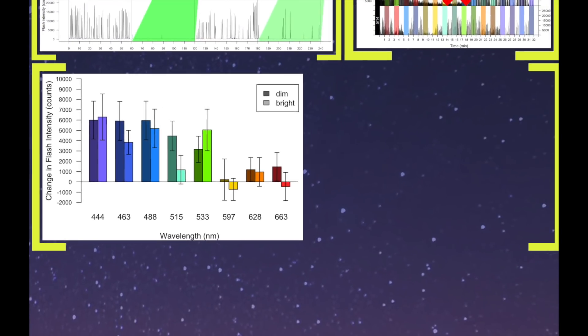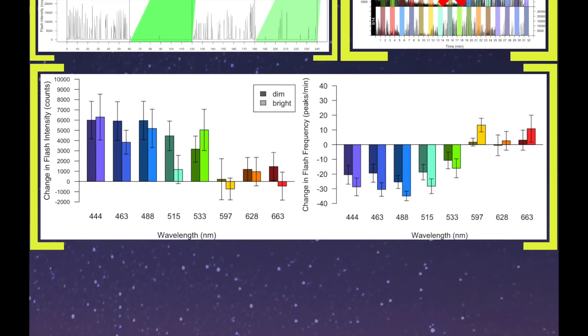And again, if we look at the changes in the amount of flashing, so we call this flash frequency, or flashes per minute, we see the same thing. From violet to green, ambient illumination causes them to flash a lot less frequently. And then the decline is even more extreme when the light is bright. Can you see that? But also, if it's yellow, orange, or red, they don't care. It doesn't affect them at all.